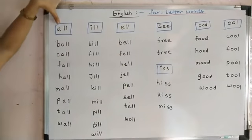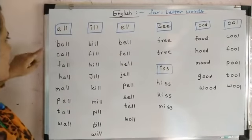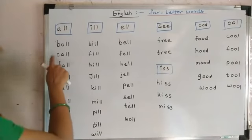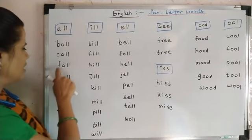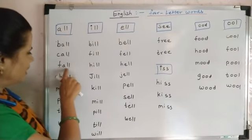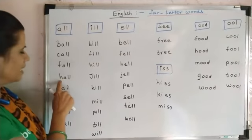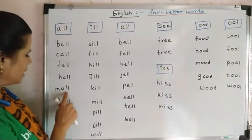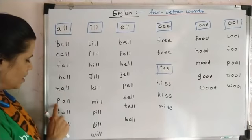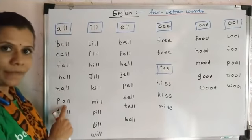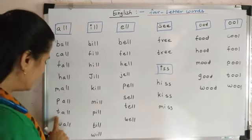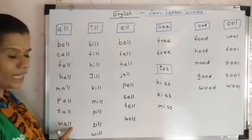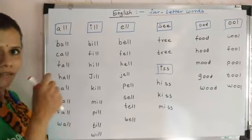A double L — all. B double L — ball. C A double L — call. F A double L — fall. H A double L — hall. M A double L — mall. P A double L — pall. T A double L — tall. W A double L — wall.